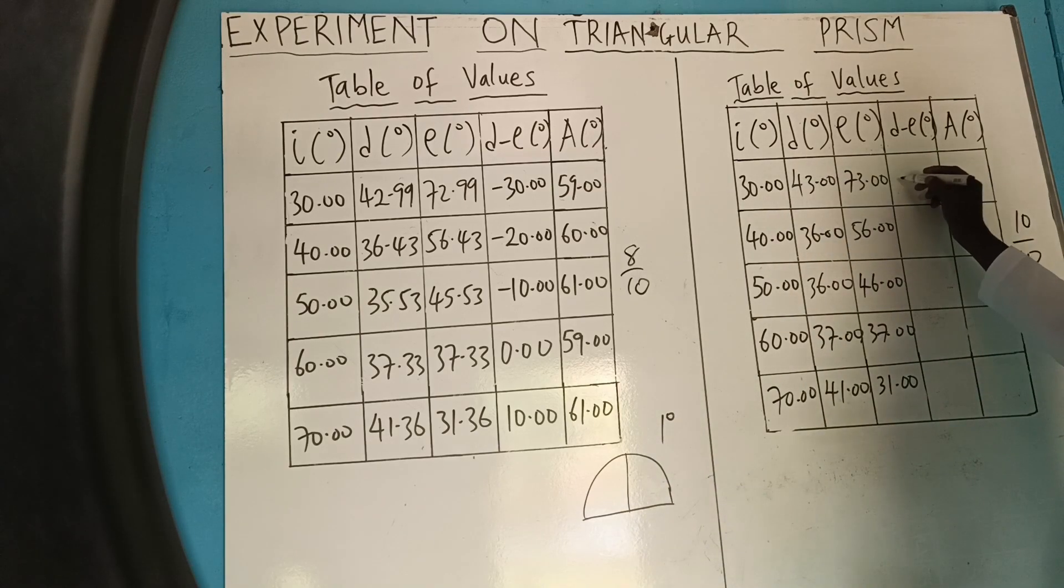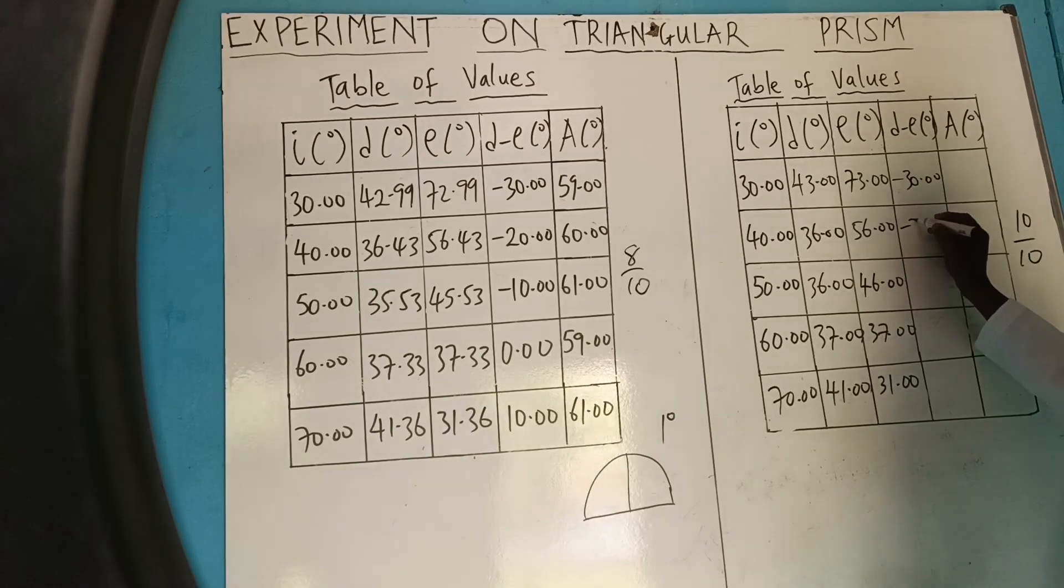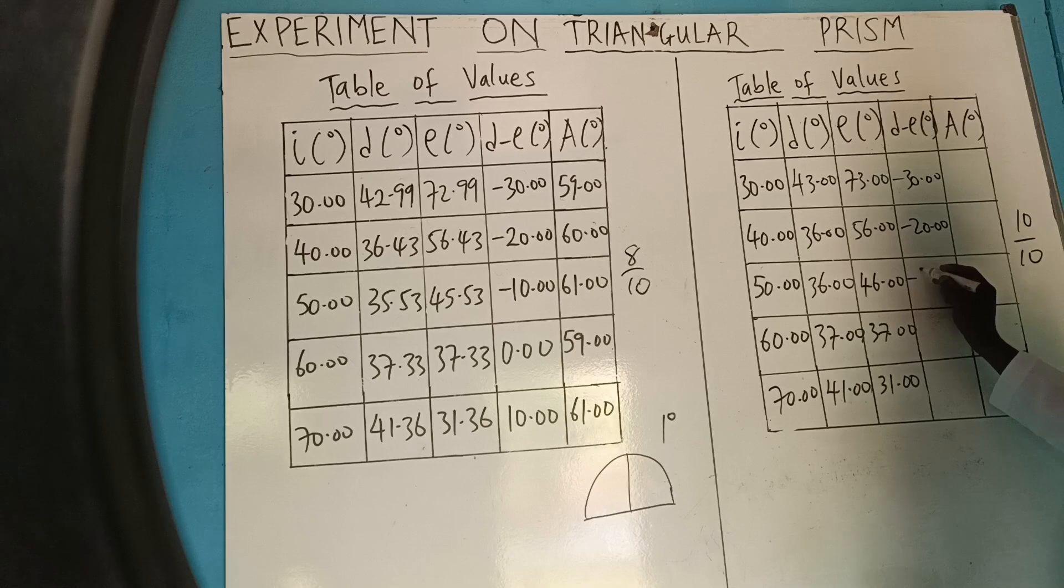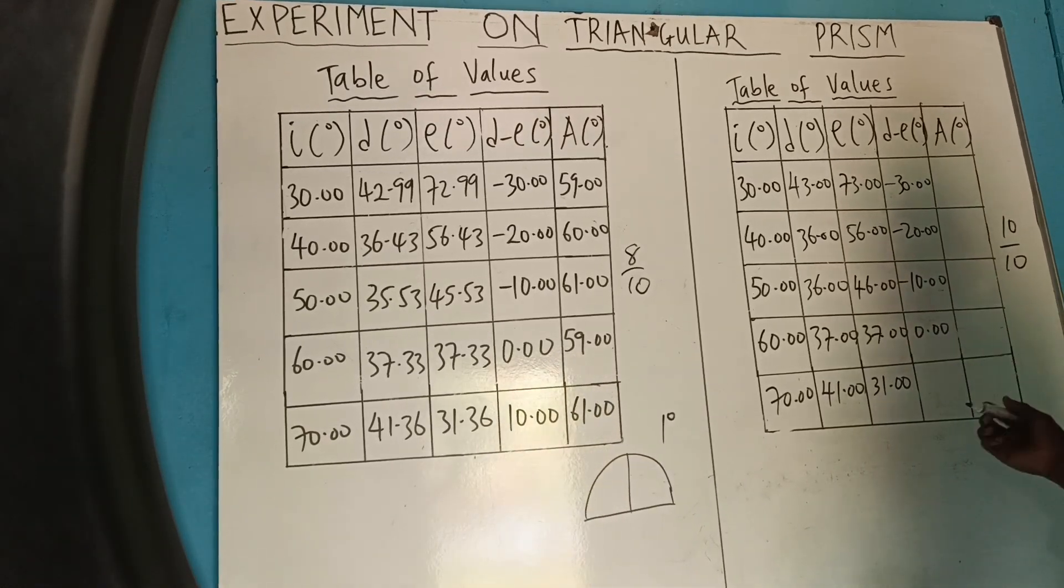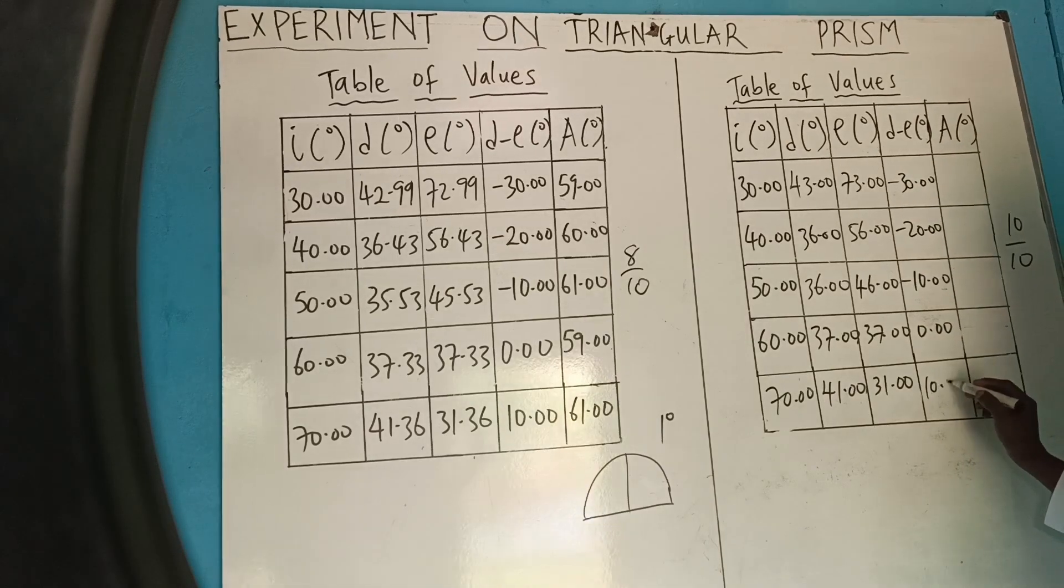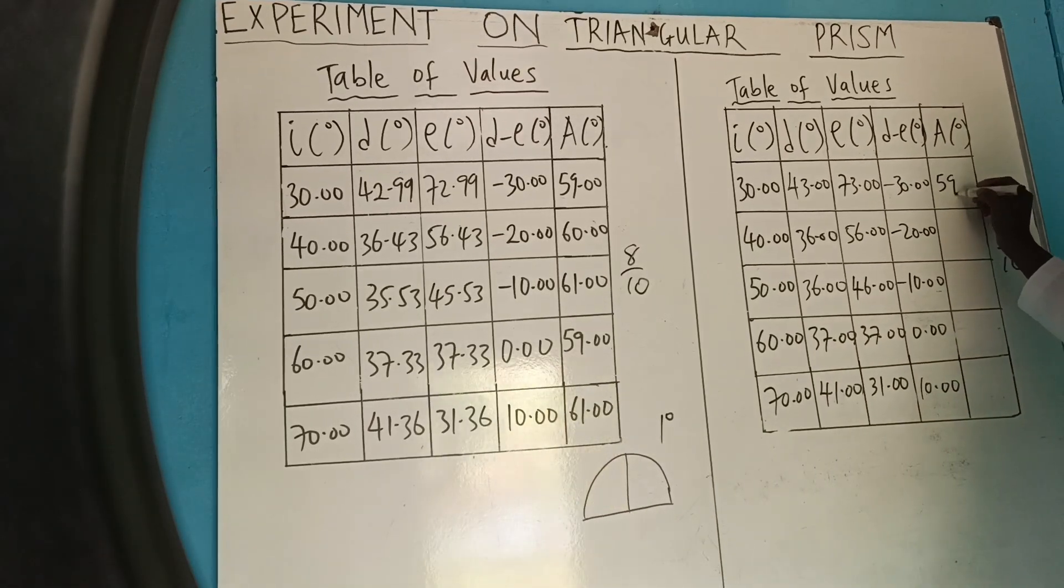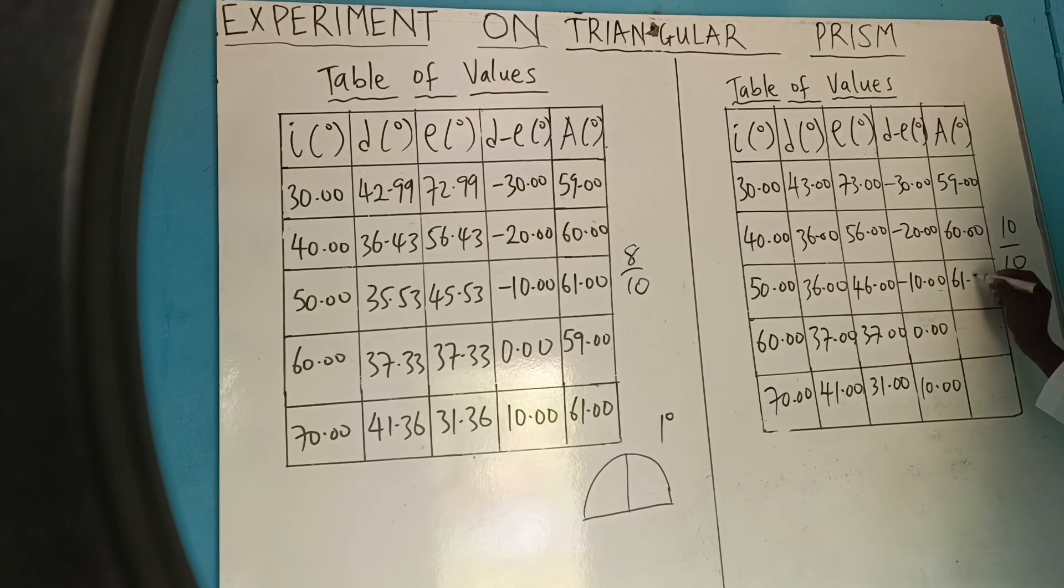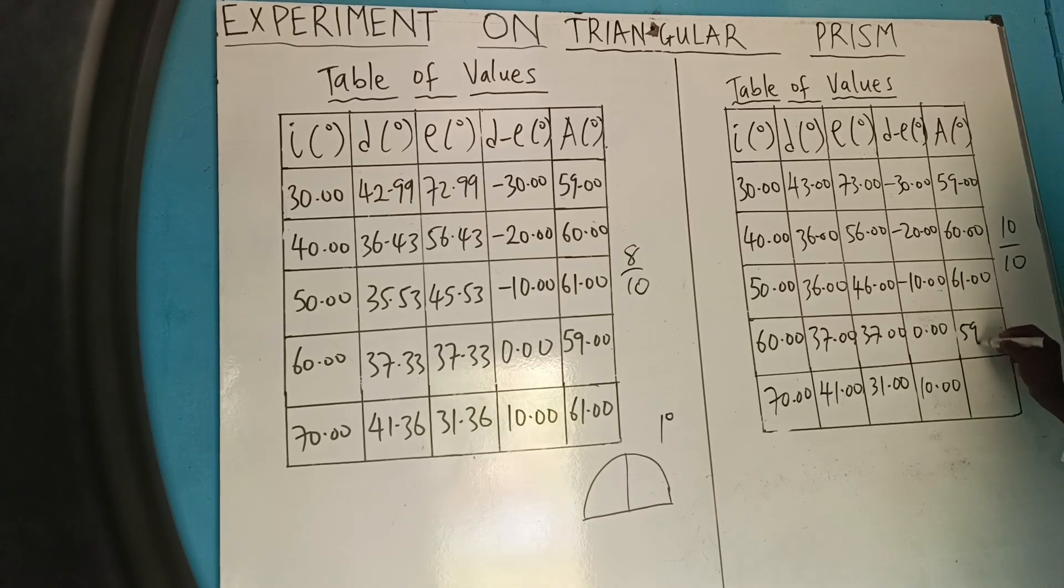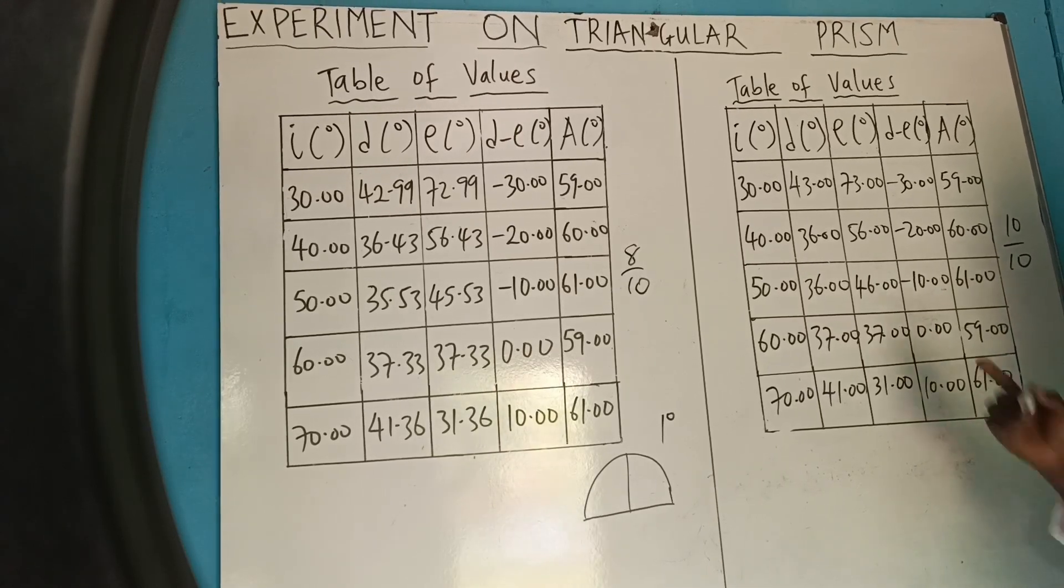Then, when I have subtracted this, I will be getting minus 30.00, minus 20.00, minus 10.00, then 0.00, then 10.00. Then, every other one remains as it is. Every other thing remains as it is because they obey the rule of nearest degrees.